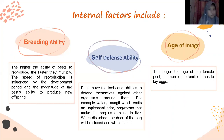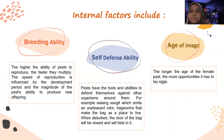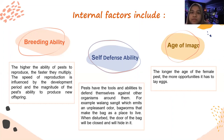Factors affecting pest population dynamics. Internal factors include feeding ability. The higher the ability of pests to reproduce, the faster they multiply. The speed of reproduction is influenced by the development period and the magnitude of the pest's ability to produce new offspring.